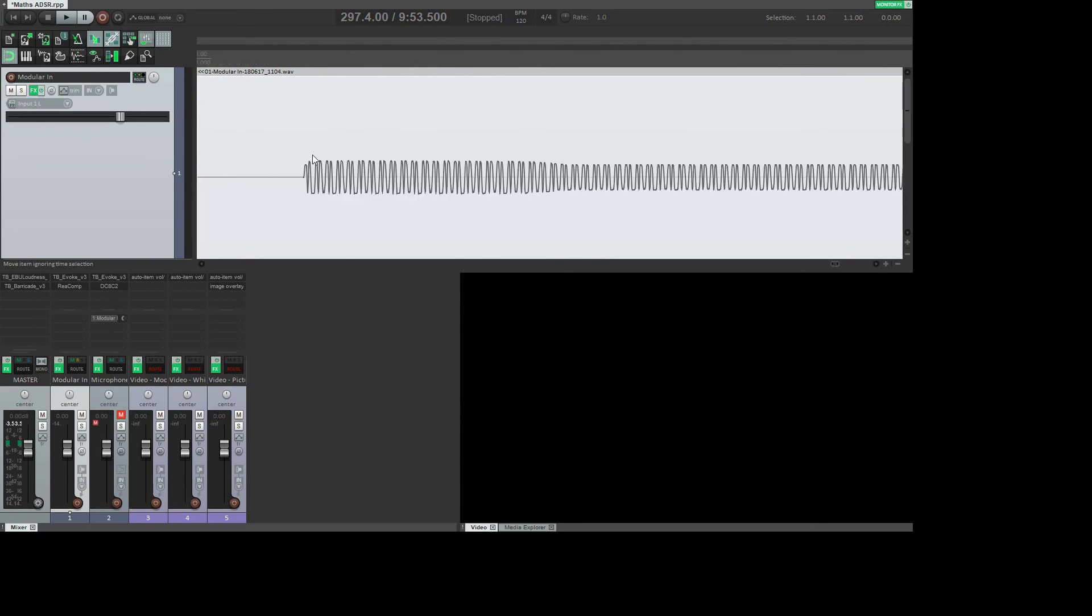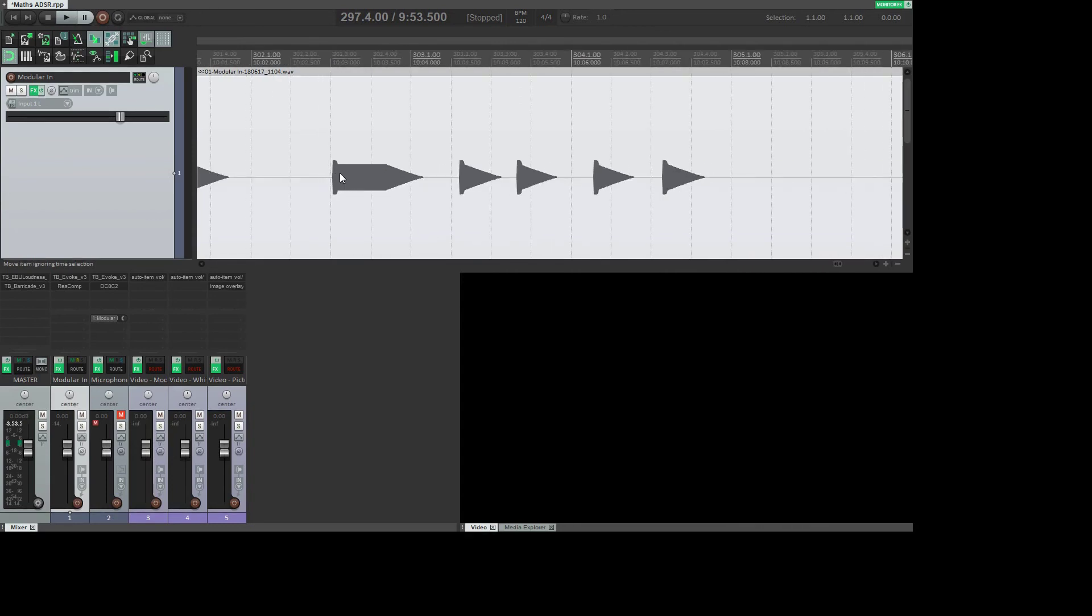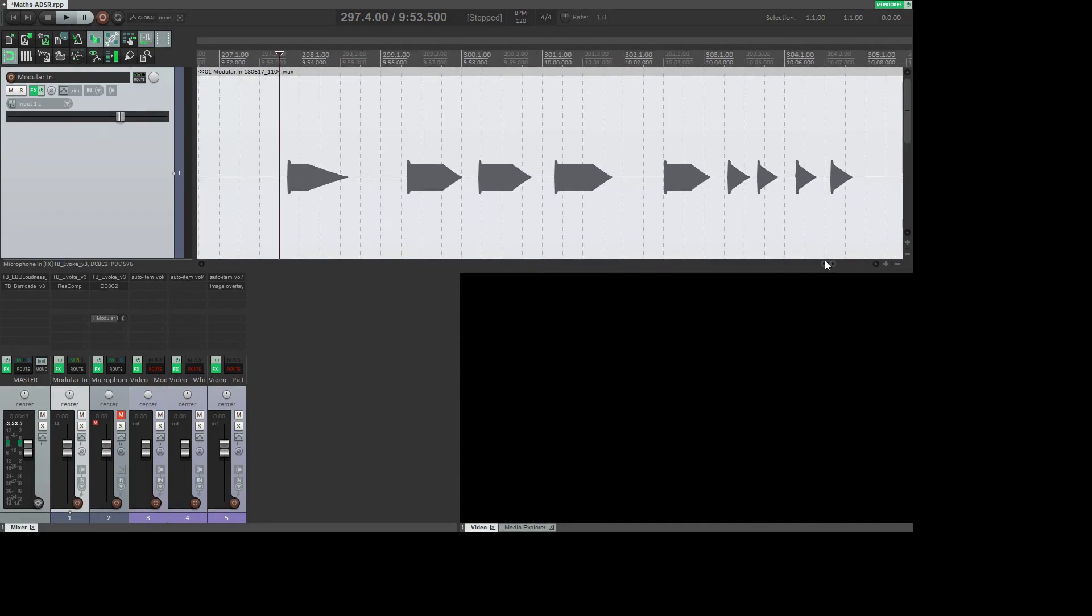So for the attack, that's going to be the rise settings on channel 1. The decay will be the fall settings on channel 1. And then the sustain will be the attenuverter for channel 4. And the release will be channel 4's fall settings. So that's how you can make MADS into an ADSR envelope pretty easily.